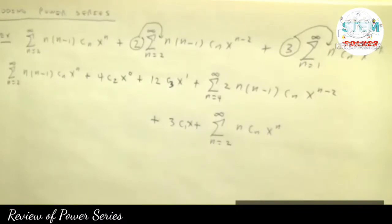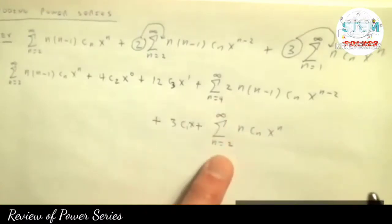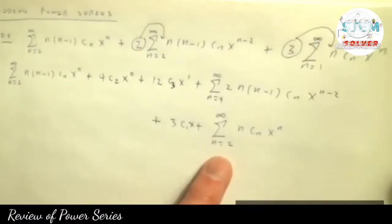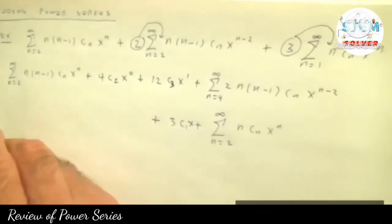That does bring us to our next consideration, though. To put them together, they have to start at the same value of n. Looking at the series, I have n equal 2, n equal 4, and n equal 2. So it would make most sense to re-index them all to start at 2, as two of them already start at 2. You can re-index to any number you want, but usually I pick the one that requires changing the least — and that's n equal 4, the only one that does not start at 2.